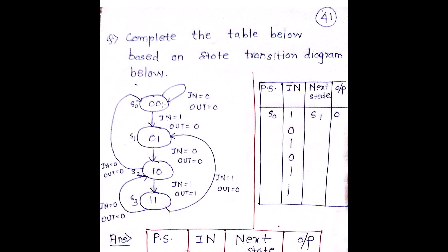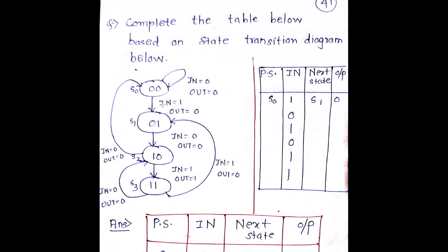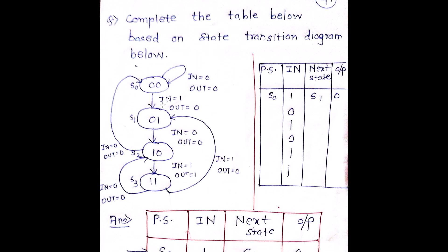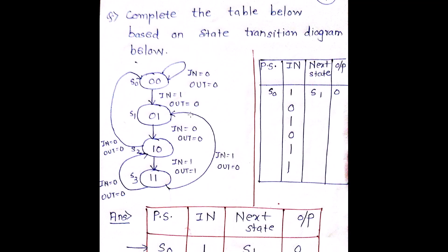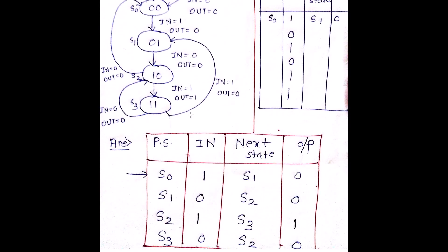We will solve one question which will give you an understanding about how to deal with numericals on FSM. Let's first understand what the numerical is saying and then solve it. The question says: complete the table below based on the state transition diagram given below. There is a diagram given — if you see, there is a state S0, a state S1, a state S2, and a state S3. Depending upon the input value, my next state will be determined and my output value will be determined.